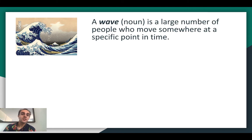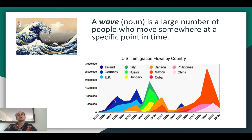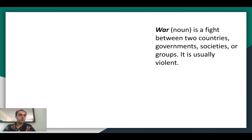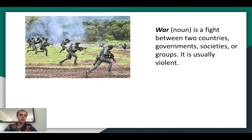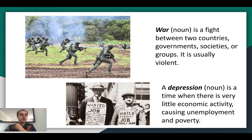A wave is a large number of people who move somewhere at a specific point in time — like an ocean wave. In the U.S., there were waves of immigrants: a wave of Cuban immigrants, Mexican immigrants, Italian immigrants, Russian immigrants. A war is a fight between two countries, governments, societies, or groups, and it's usually violent. A depression is a time when there is very little economic activity, causing unemployment or poverty. The Great Depression of 1929 happened in the U.S. and around the world, and a lot of people became poor and weren't working.